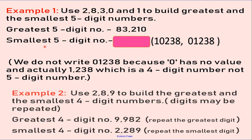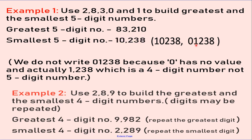Now, what do we need to do to build the smallest 5-digit number? The teacher has given two examples — can you guess which is correct? Is 10,238 correct, or is 1,238 correct? If you choose 1,238, then you are wrong because it is not a 5-digit number — it is a 4-digit number, and 0 at the first place has no value. So we need a 5-digit number. The correct choice is 10,238. We get it by interchanging the digits: after 0, the next smallest digit is 1, so we interchange their places — 1 at the first place and 0 at the next place — giving us 10,238.